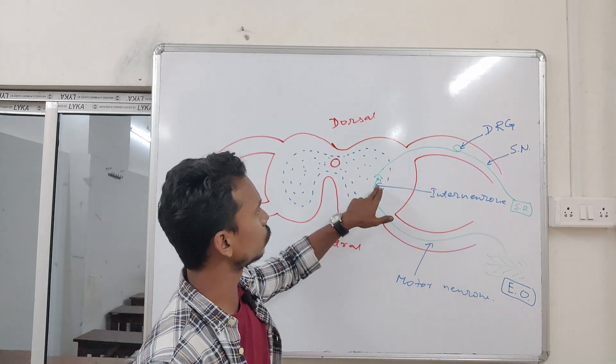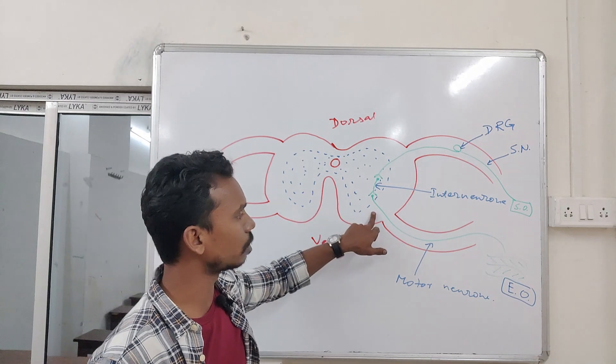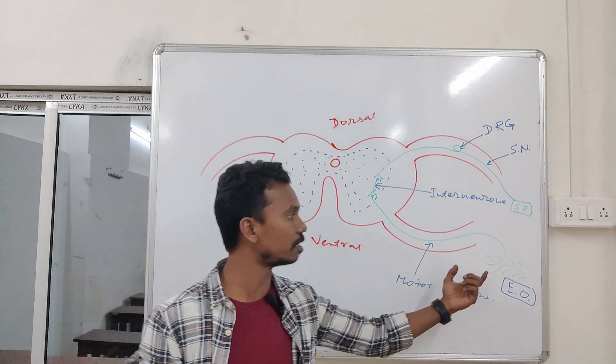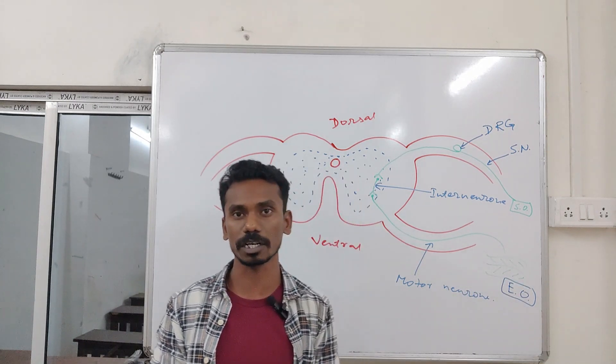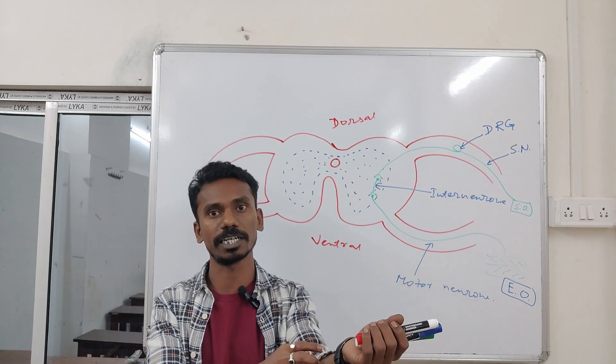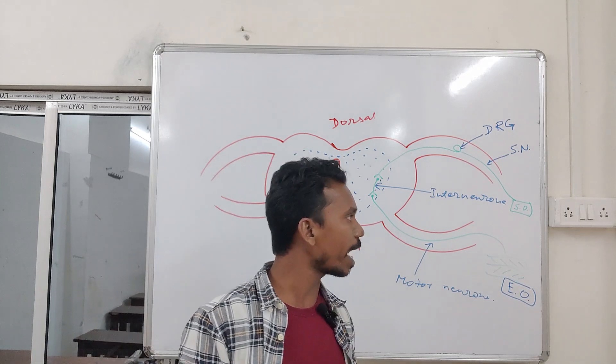It sends the signal to the interneuron. The interneuron sends the signal to the motor neuron. The motor neuron will come into action and innervate the effector organ. The effector organ might be your biceps or muscles in the forearm, so that you can pull your hand back.